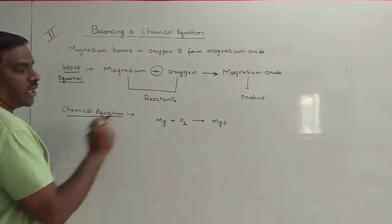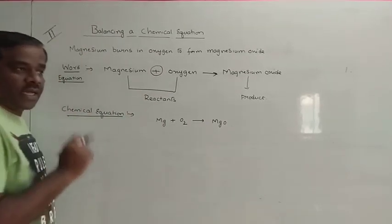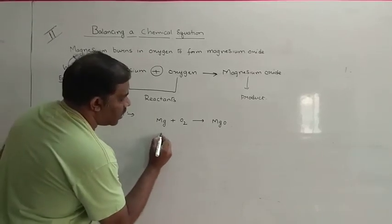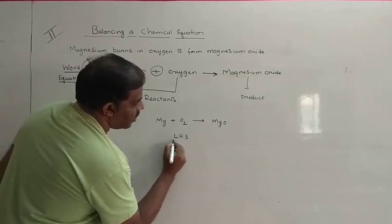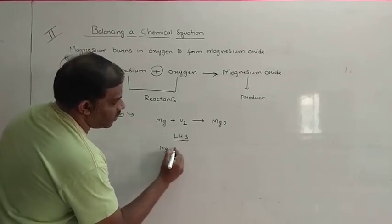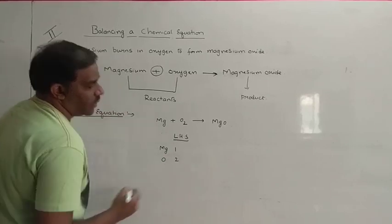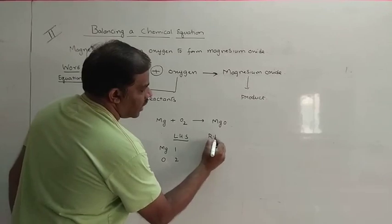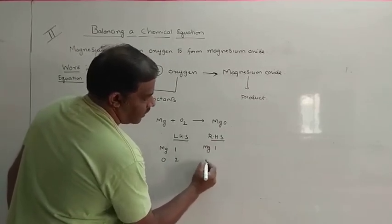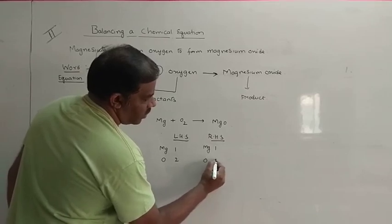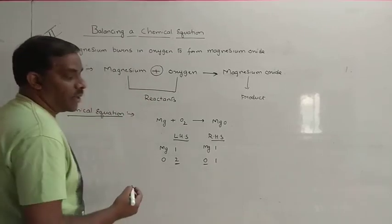Oxygen should be written in its molecule form. This gives rise to MgO. Now this is a chemical equation, but it is still unbalanced. Why? Because on the left-hand side we have the number of magnesiums to be 1 and the number of oxygens to be 2, whereas on the right-hand side we have the number of magnesiums to be 1 and the number of oxygens to be 1.